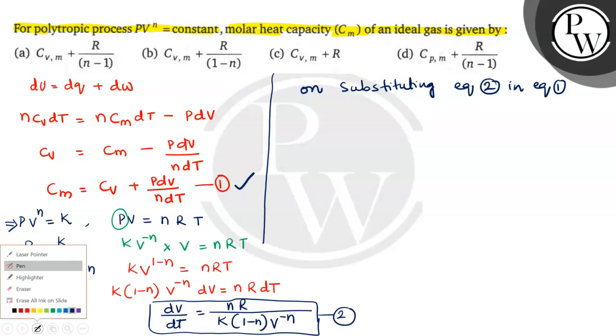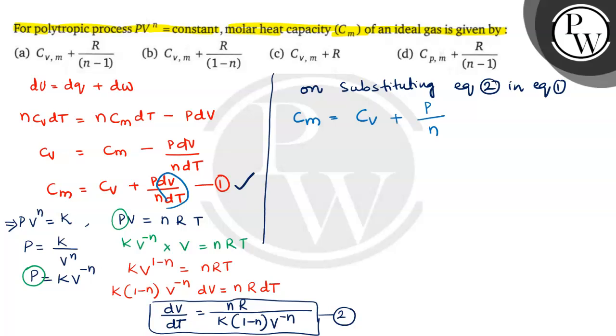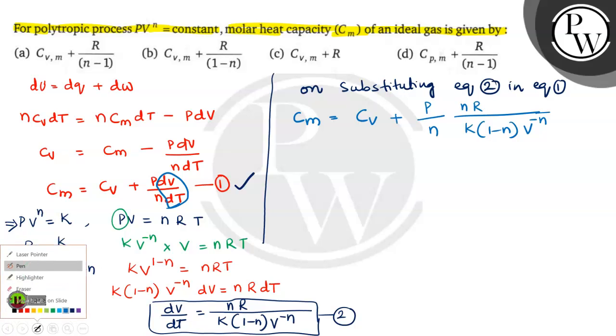This is Cm = Cv + P/n × dV/dT. In the place of dV/dT, I am substituting equation 2. In equation 2, what is given? nRT / [k(1-n) × V^(-n)].